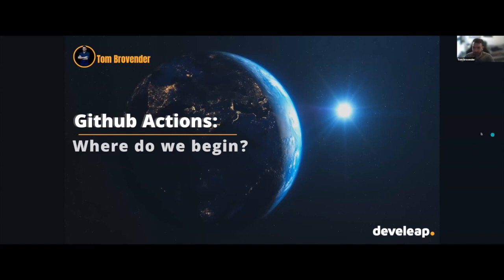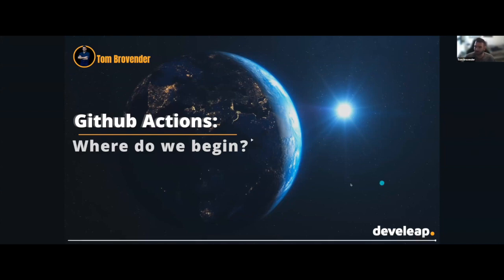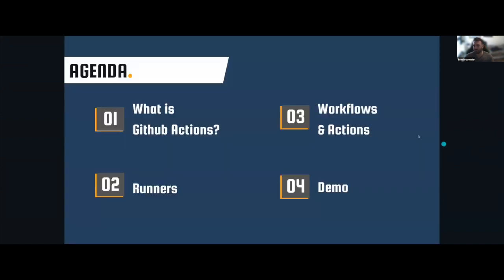What we're talking about today is how to begin working with GitHub Actions — transitioning from what would normally be Jenkins or GitLab solutions onto the new platform. We're going to cover what GitHub Actions is, a bit about runners and how they work, how to write actual workflows, and then a live demo at the end.